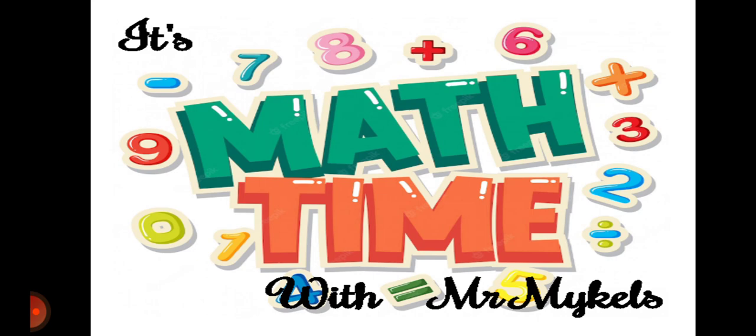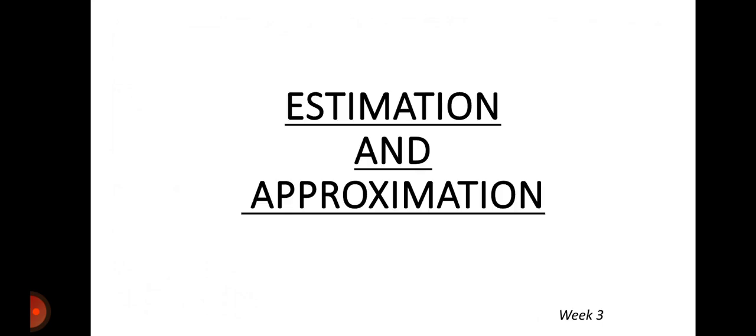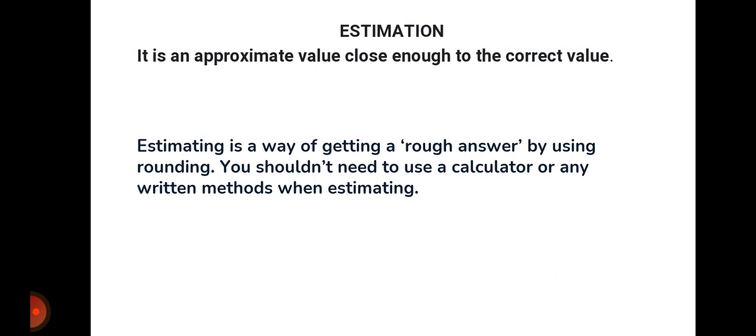It is not just mere assumption, but it is an assumption that is intact with what we really know. Now, what are we talking about? We are talking about estimation and approximation. Now, let's look at the meaning of estimation. When we talk about estimation, we are talking about approximating — that is, an approximate value close to the correct value.